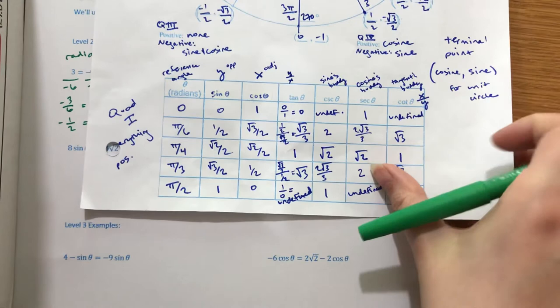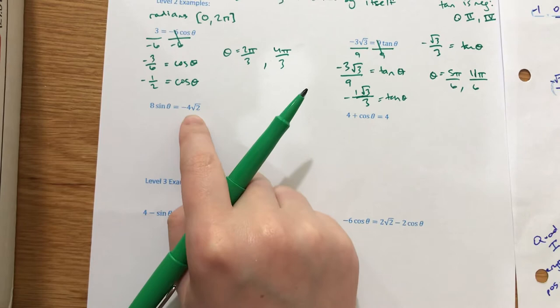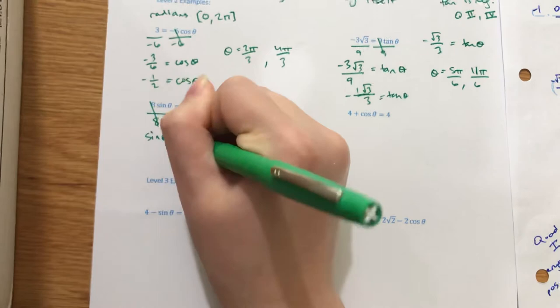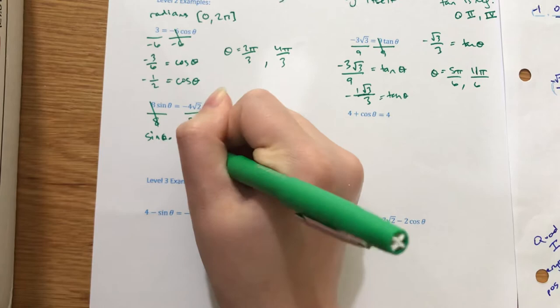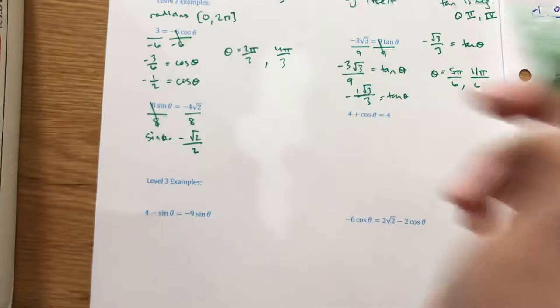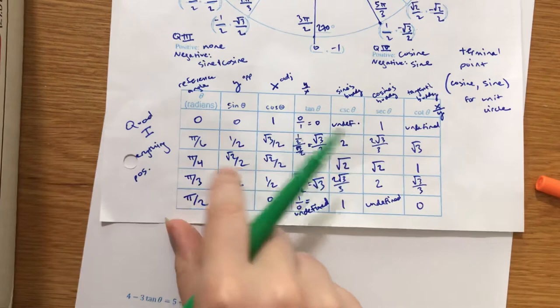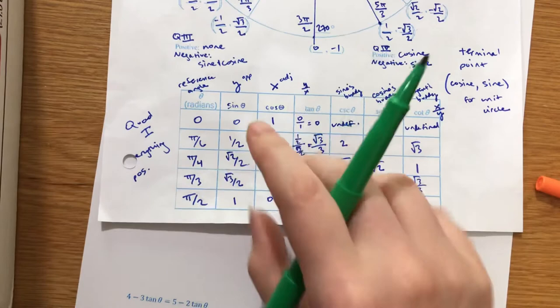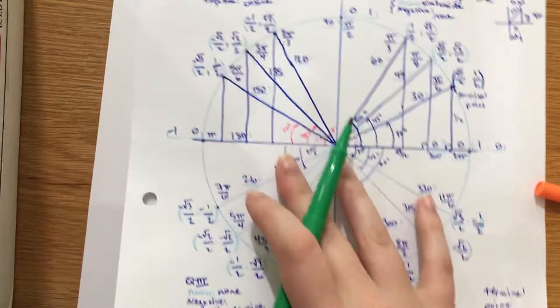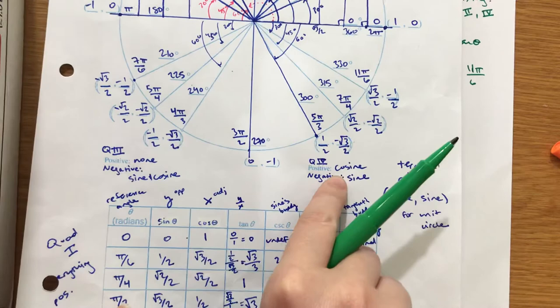Next one: 8 sine theta equals negative 4 root 2. Dividing both sides by 8, sine theta equals negative 4 over 8, which is negative one-half, so negative root 2 over 2. We need to ask when sine is root 2 over 2 — go to your table — that's at pi over 4 values. We want the negative ones: sine is negative in quadrants 3 and 4. So the pi over 4 values from those two quadrants are 5 pi over 4 and 7 pi over 4. Theta equals 5 pi over 4 and 7 pi over 4.